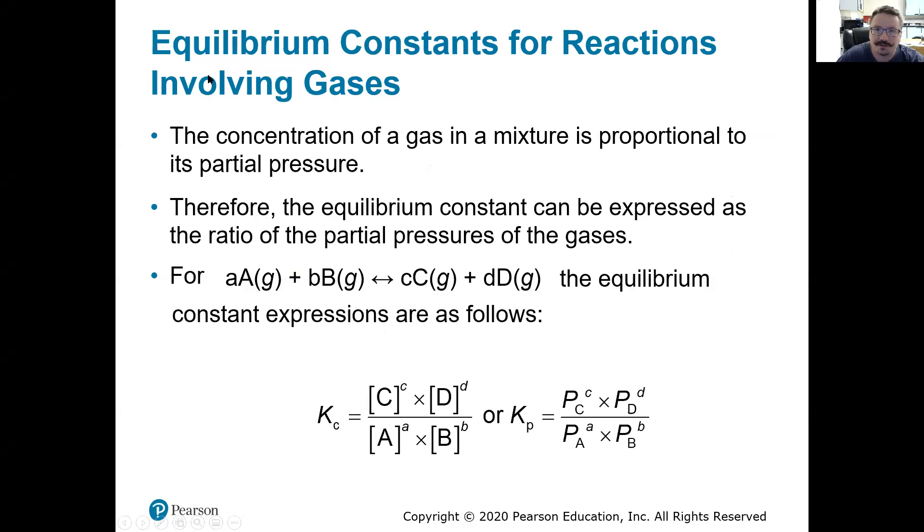All right, so equilibrium constants for reactions involving gases. What we saw before is we would have a reaction, and we were looking at the concentrations, usually the molarity. So if you saw product C and D, reactants A and B, you see those brackets around those, those typically indicate concentration. So this is more specifically the equilibrium constant with respect to concentration, K sub C.